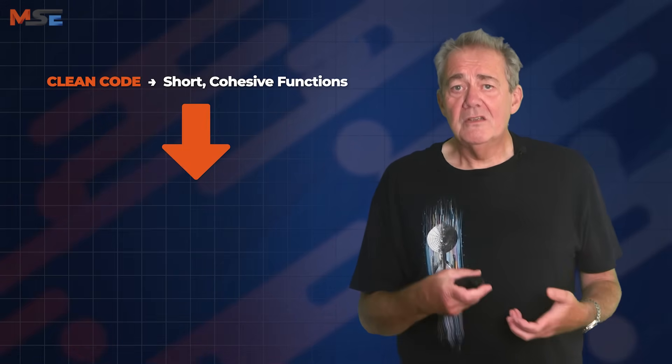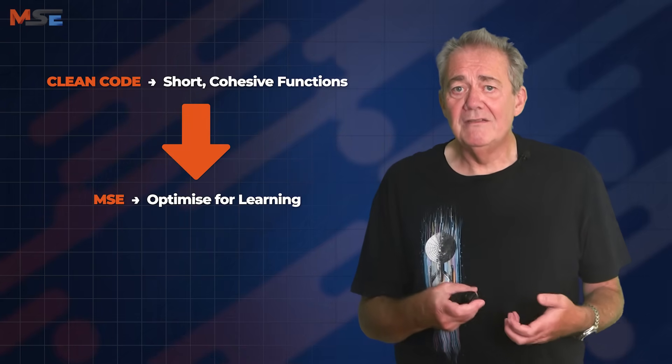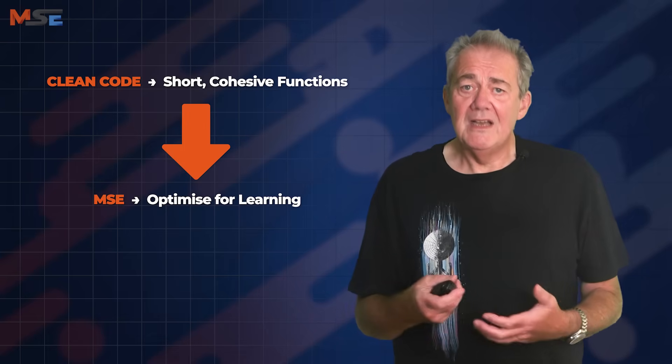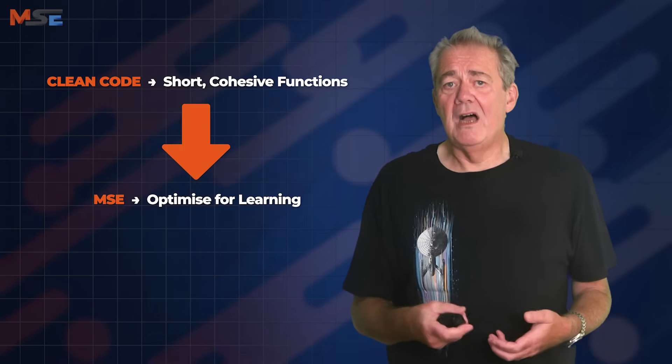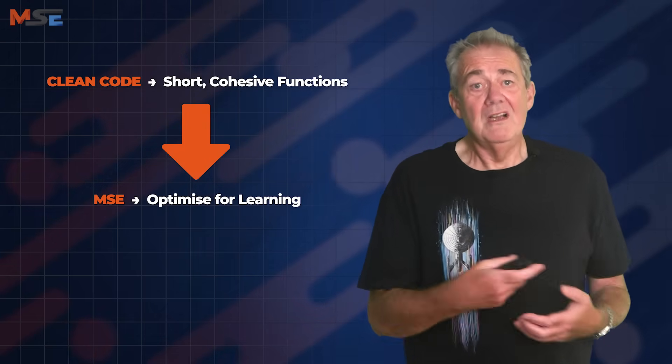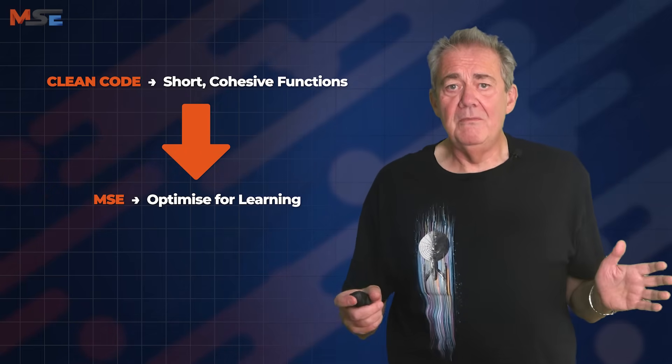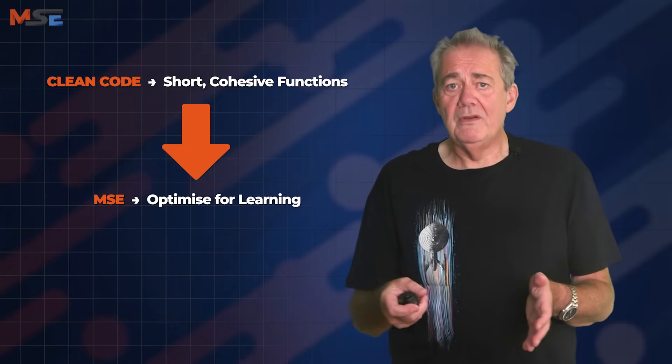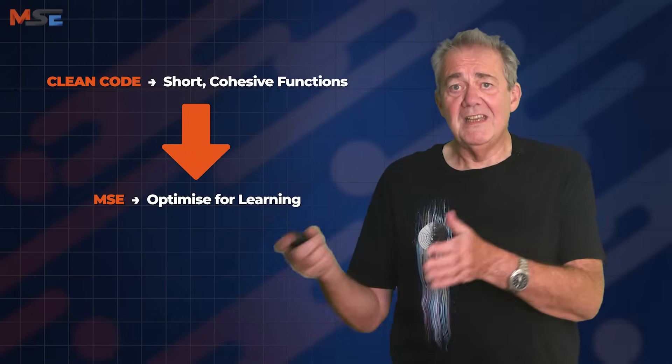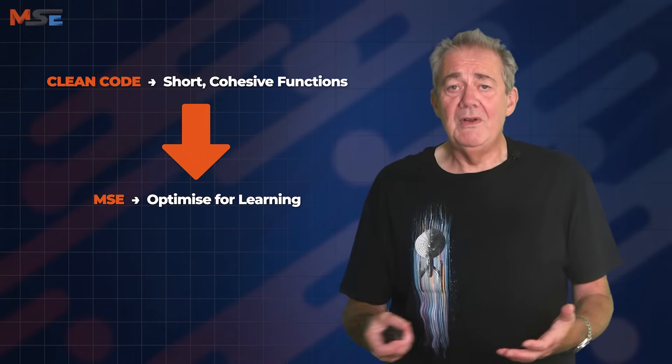The Clean Code ideal of short, cohesive functions supports the engineering goals of increasing our rate of learning very strongly. Smaller things are easier to change and test. Clean Code highlights the importance of preferring simple constructs over clever ones — again, no disagreement from me. Simplicity leads to fewer bugs. Fewer bugs leads to faster iteration. And faster iteration leads to more learning, which is what we're really looking for. In short, Clean Code provides a set of practices that broadly reduce complexity and increase the speed and quality of our feedback loops. That's good engineering, and I couldn't agree more with those goals.